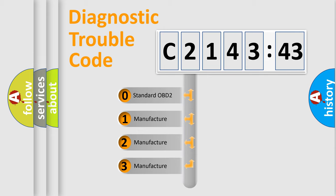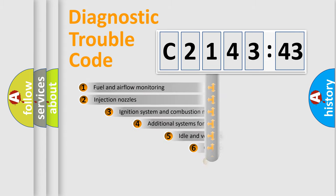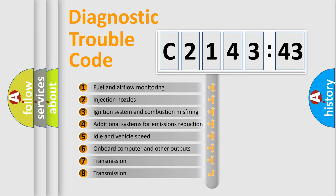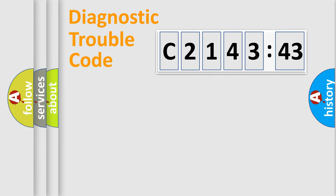This distribution is defined in the first character code. If the second character is zero, it is a standardized error. In the case of numbers 1, 2, or 3, it is a manufacturer-specific error. The third character specifies a subset of errors. The distribution shown is valid only for the standardized DTC code. Only the last two characters define the specific fault of the group.